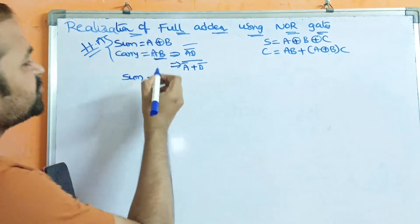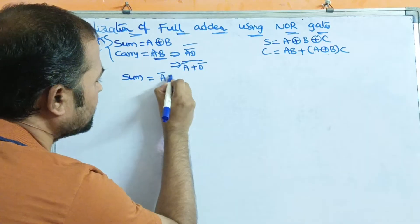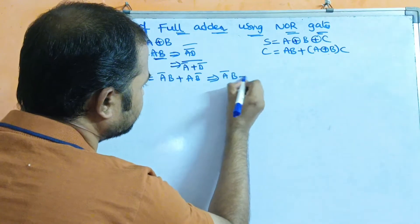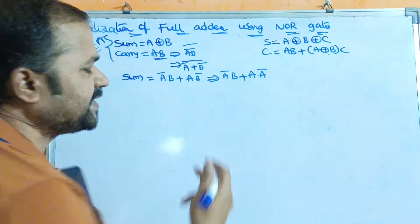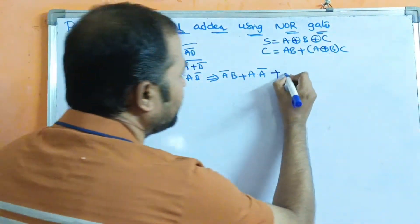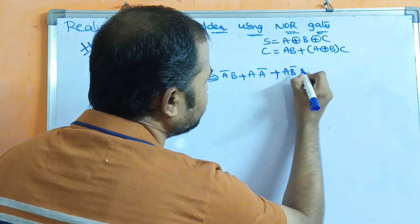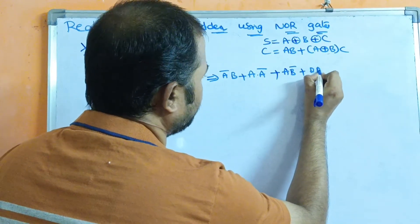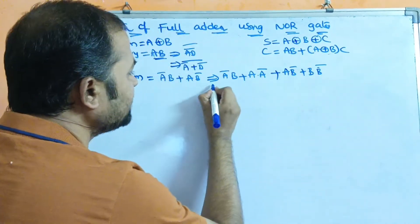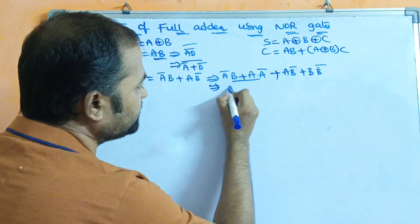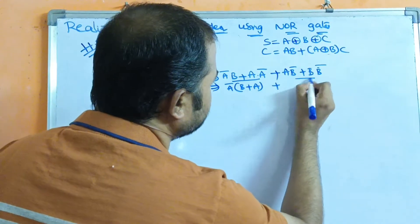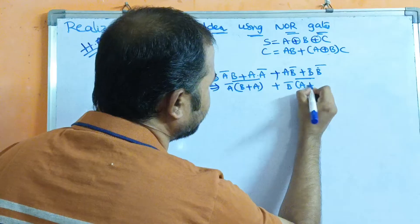Now let us evaluate the sum expression. Sum is equal to A exclusive-or B, which equals ĀB + AB̄. We can write this as ĀB + A·Abar — the result of A·Ā is 0, so by adding 0 the result won't change — plus AB̄. Now let us add BB̄, which is also 0, so the result won't change. If we observe these terms, Ā is common, so we can write Ā(B + A). Then B̄ is common in the remaining terms, so we can write B̄(A + B).